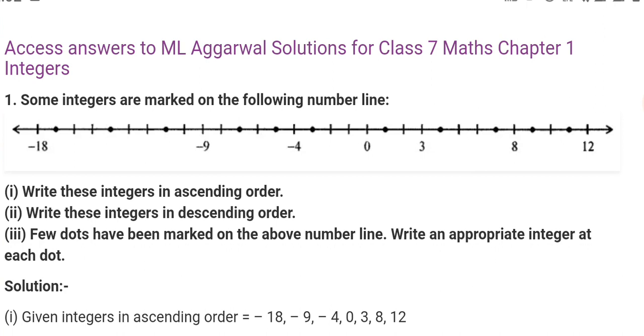First question is you can see some integers are marked on the number line. So look here: minus 18, minus 9, minus 4, 0, 3, 8, and 12. Some integers are marked on the number line. You have to write these integers in ascending order. So ascending order means what is happening in small to large. So ascending order, smallest will be minus 18, then minus 9, then minus 4, then 0, then 3, then 8, then 12. This is the required ascending order.